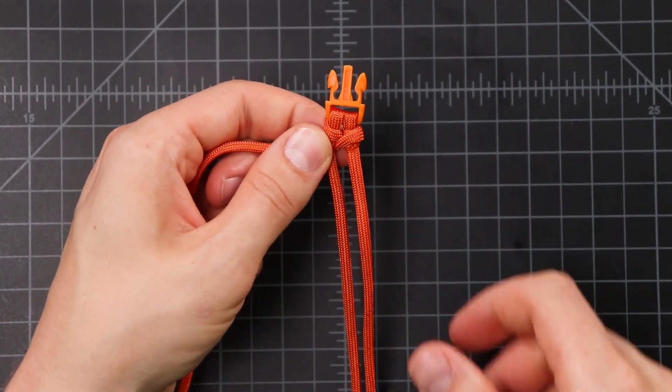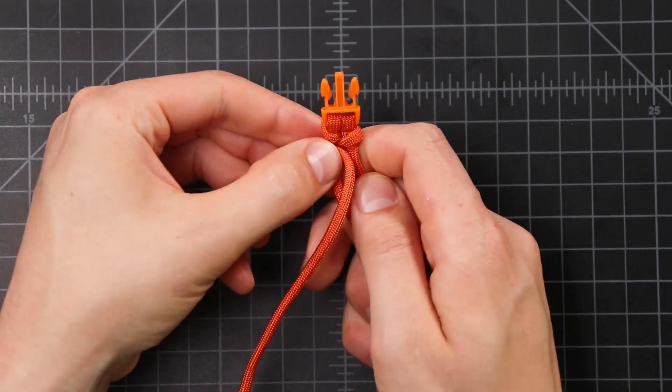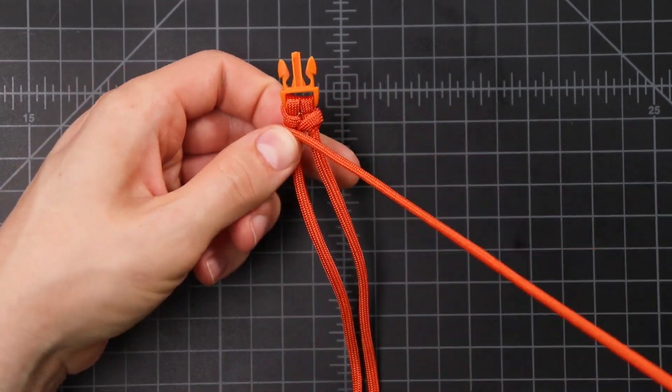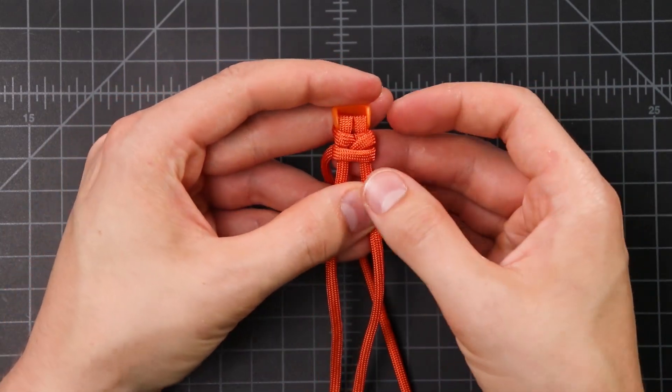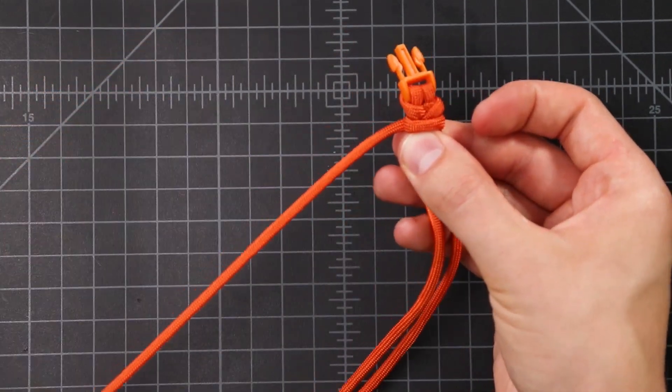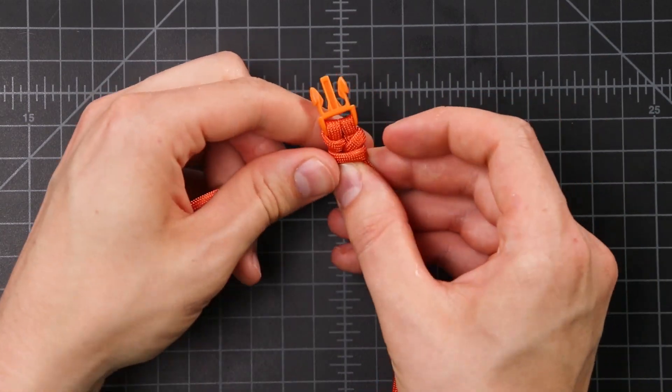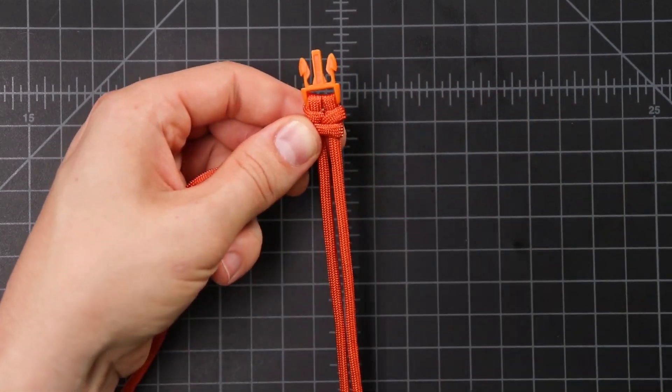So this is where it differs from a normal fishtail. Instead of going back down through the middle, we're going to do a full wrap across the top. And then around the back to the original side. After you do that, then we'll do another back and forth of the fishtail.